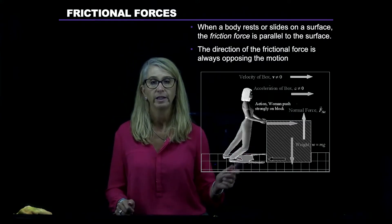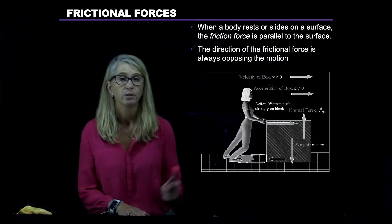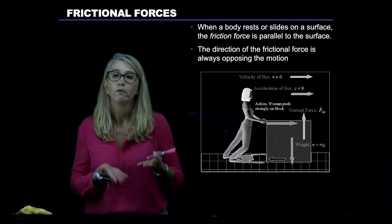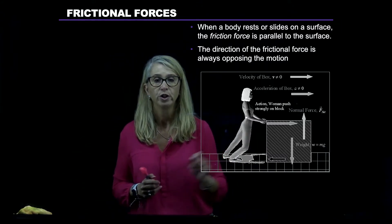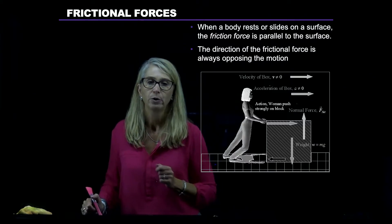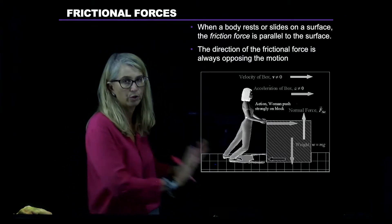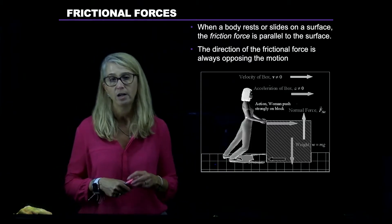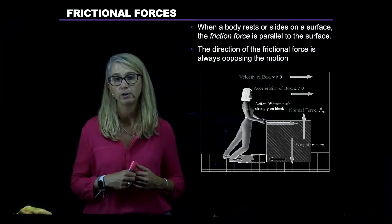In this picture we have a woman trying to push a box, and there are a couple of different forces labeled that are acting on the box. There's the weight of the box acting straight down, the normal force from the floor pushing up on the box, the force she's pushing with, and finally there's an arrow at the bottom — that arrow is the frictional force. The woman is pushing the box along, but because the ground is not perfectly smooth, there's a frictional force acting against her desired direction of motion.